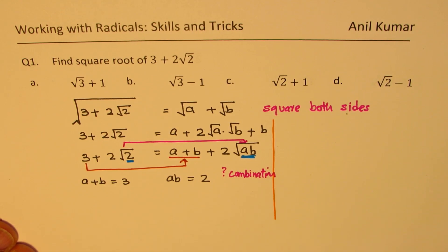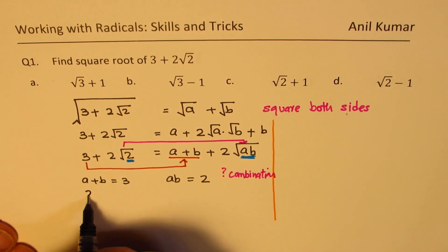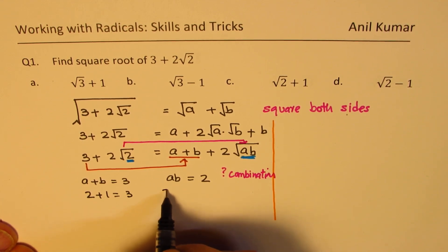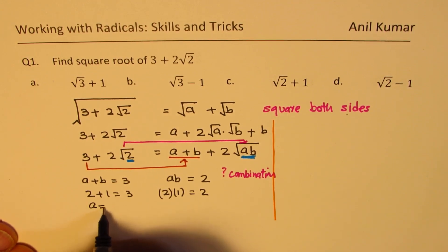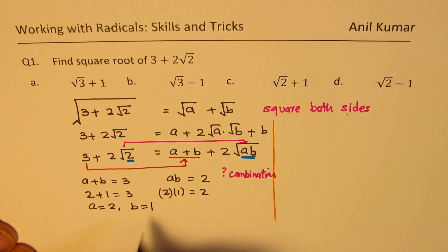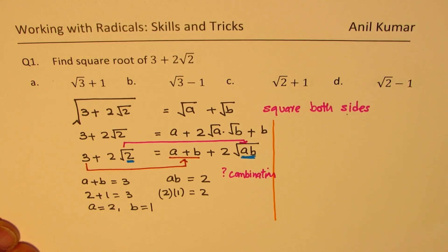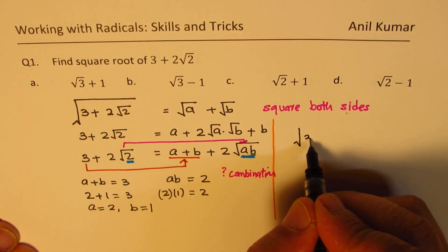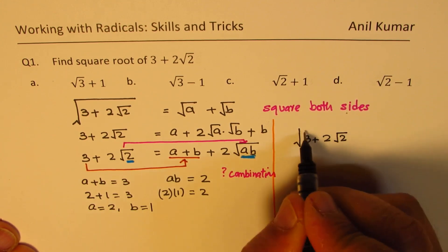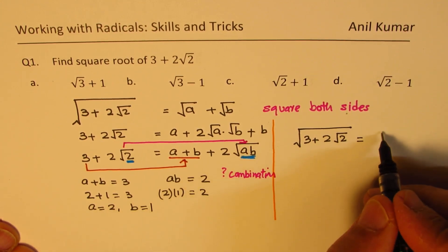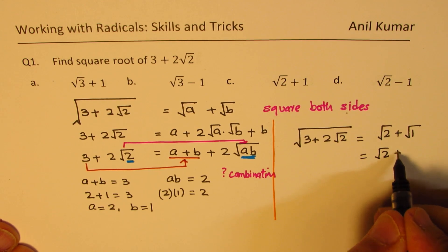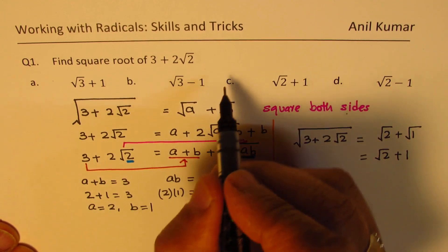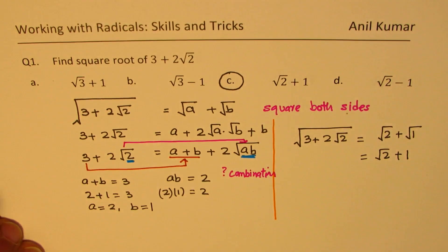What combination gives us this result? Straightaway, 2 plus 1 is 3, and 2 times 1 is also 2. So a equals 2 and b equals 1. Therefore the solution for square root of 3 plus 2 square root 2 is square root of 2 plus square root of 1, which is just 1. So the answer is square root of 2 plus 1, and option C is correct.